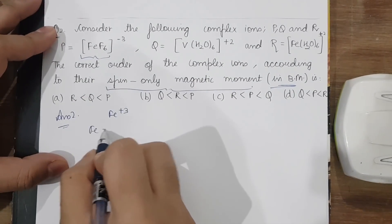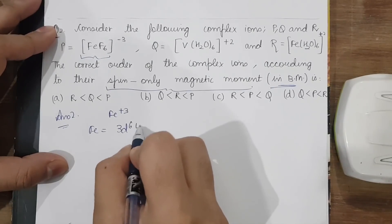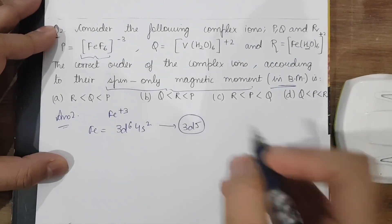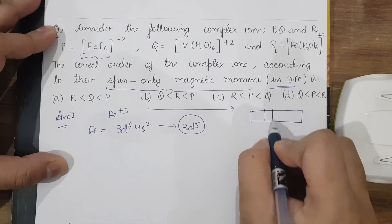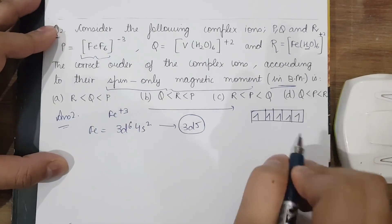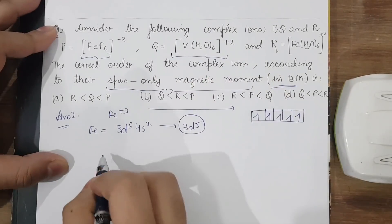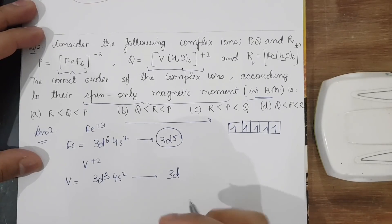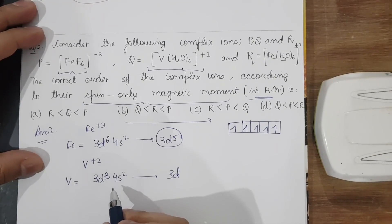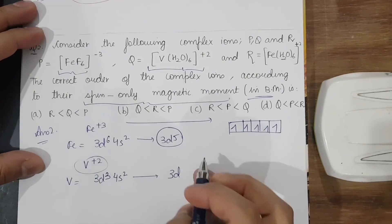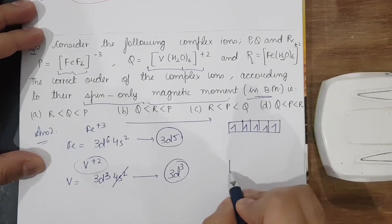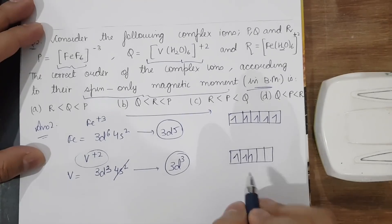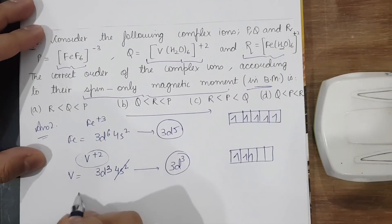For Fe³⁺ (3d⁵), one electron will be in each of the five orbitals — giving 5 unpaired electrons. For V²⁺ in Q: V is 3d³4s², so V²⁺ gives 3d³, meaning 3 unpaired electrons. For Fe²⁺ in R: removing two electrons from Fe gives 3d⁶.